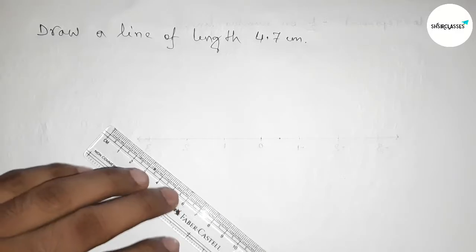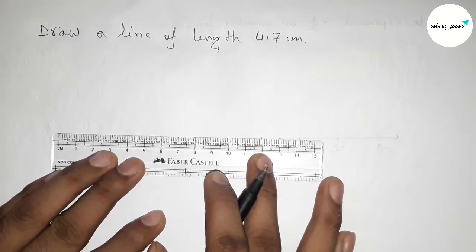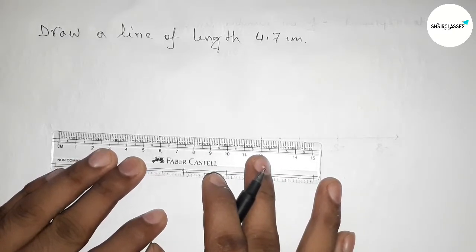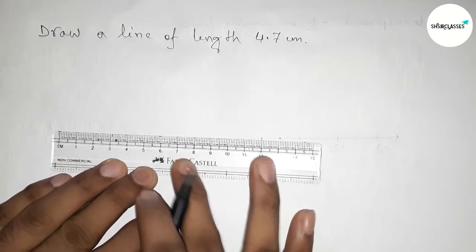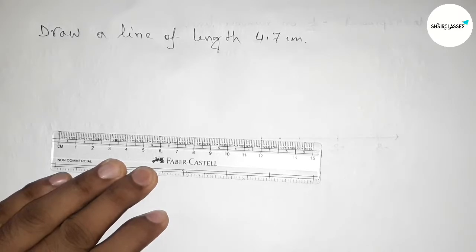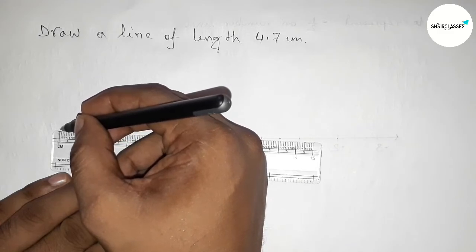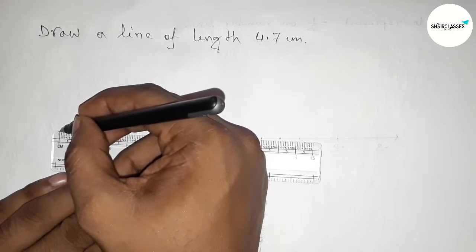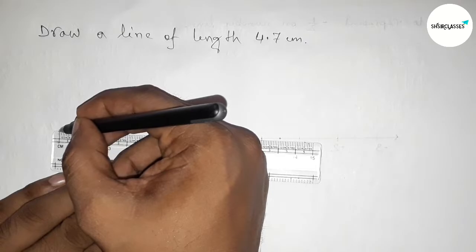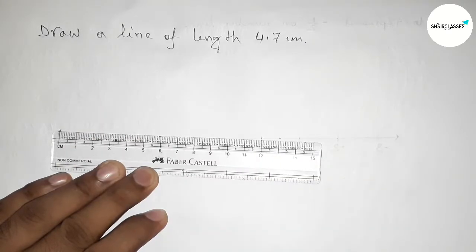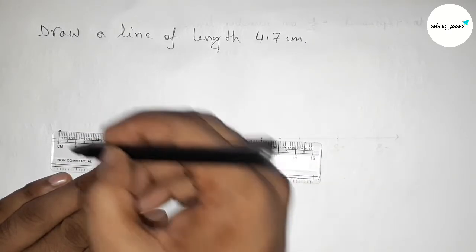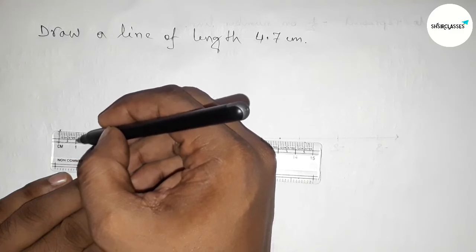Okay, so first putting the scale this way and now measuring the length 4.7 centimeter. So this is starting here, starting at 0. First marking this starting 0. Now counting 4.7, so this is starting 0, 1 centimeter...